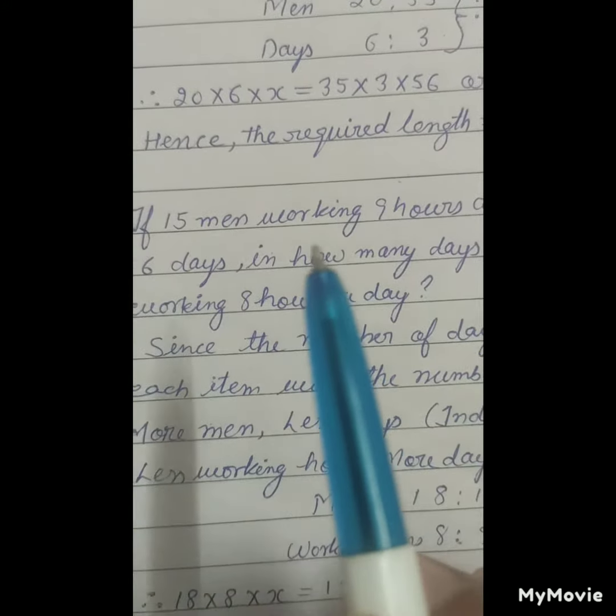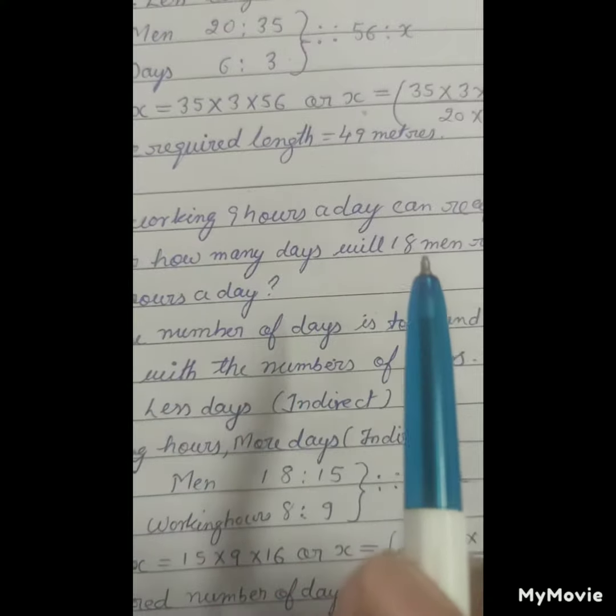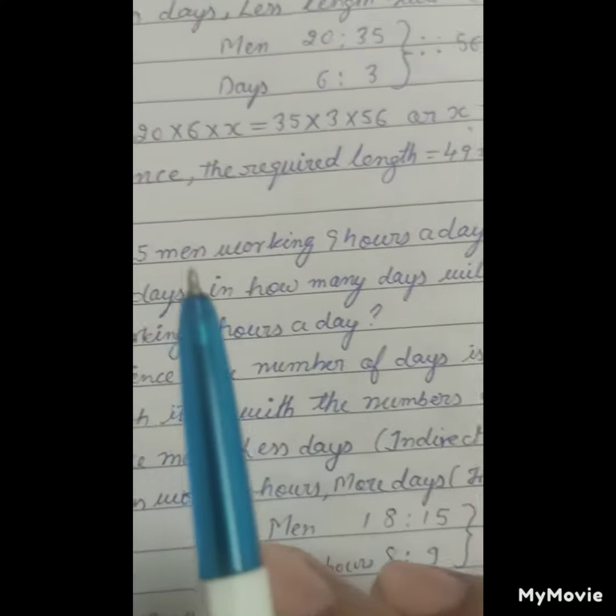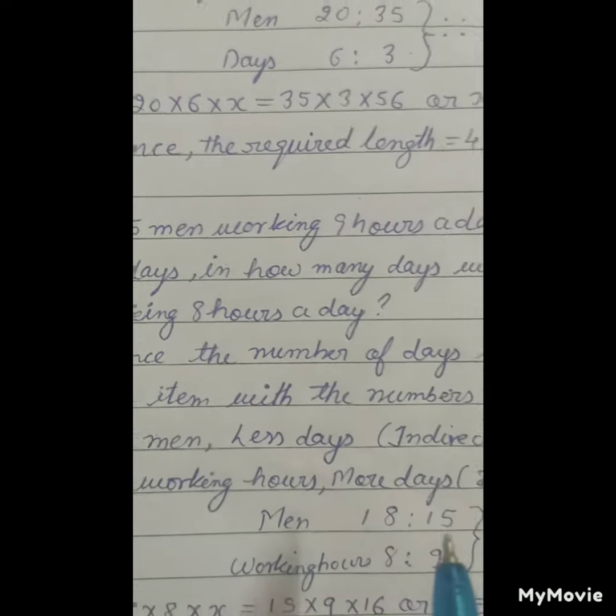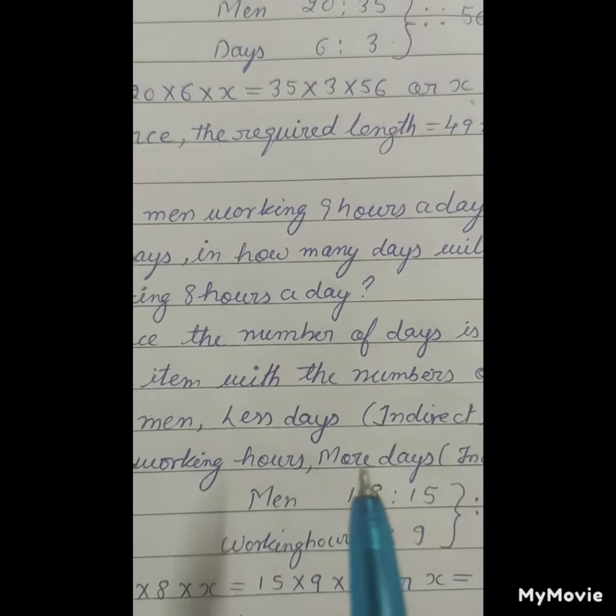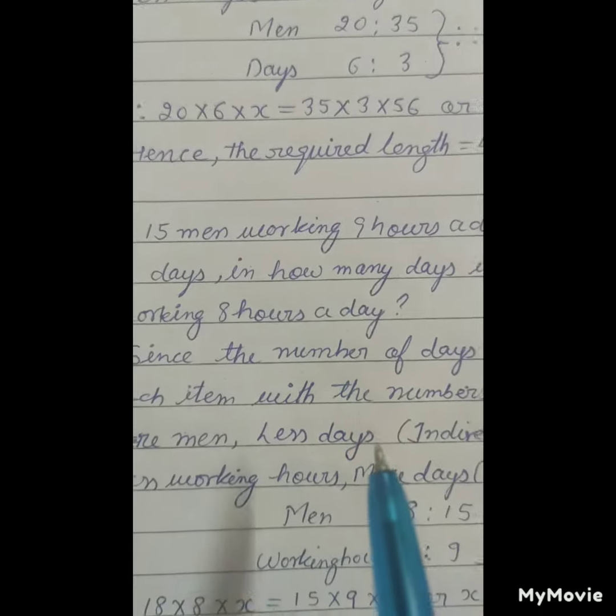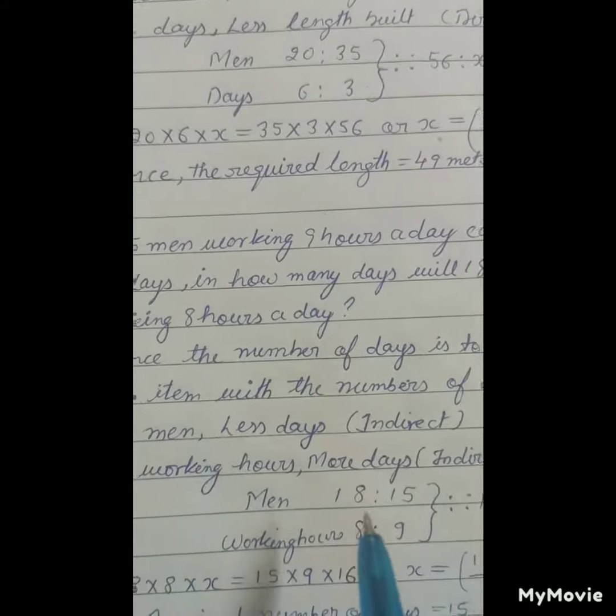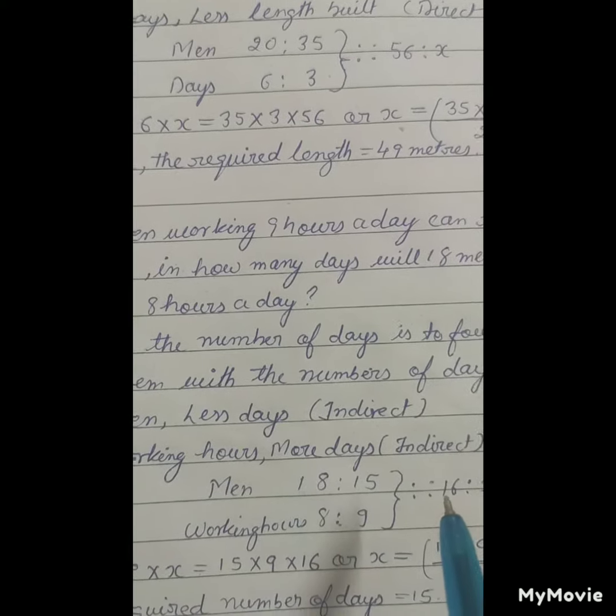Men, first case is 18 in second case and 15 in first case, 18 ratio 15. And working hours, 8 in second case and 9 in first case.